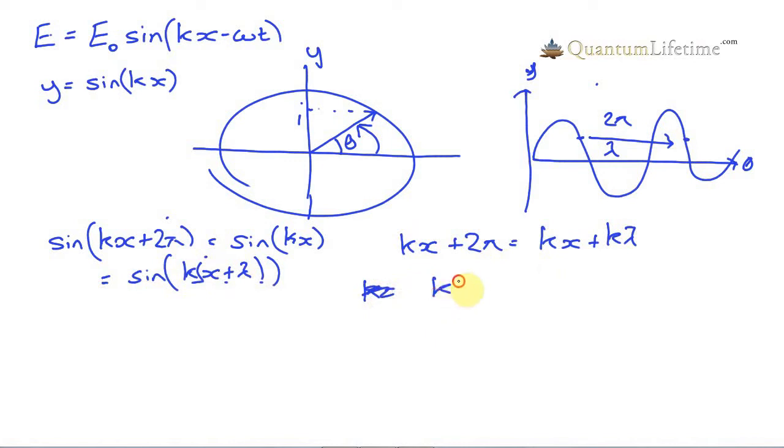So we're just multiplying this out here to get kx plus k lambda. So k lambda is 2 pi. So we can say k times lambda, the wavelength, equals 2 pi. Or k equals 1 divided by the wavelength times 2 pi.